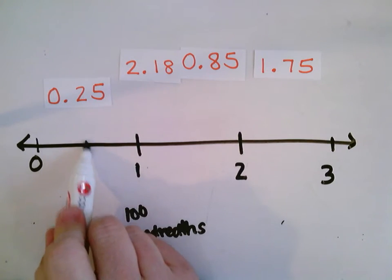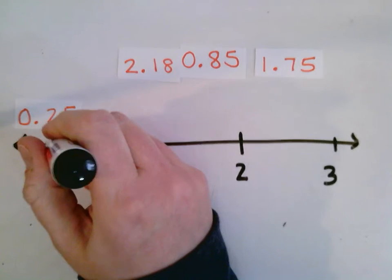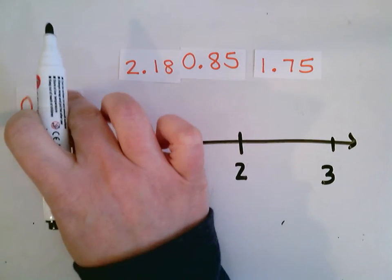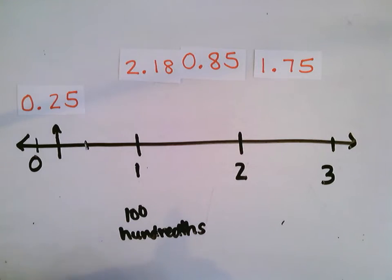Half would be right here. 25 is actually less than half. It would come somewhere between halfway and 0. So that is where 25 hundredths would go.